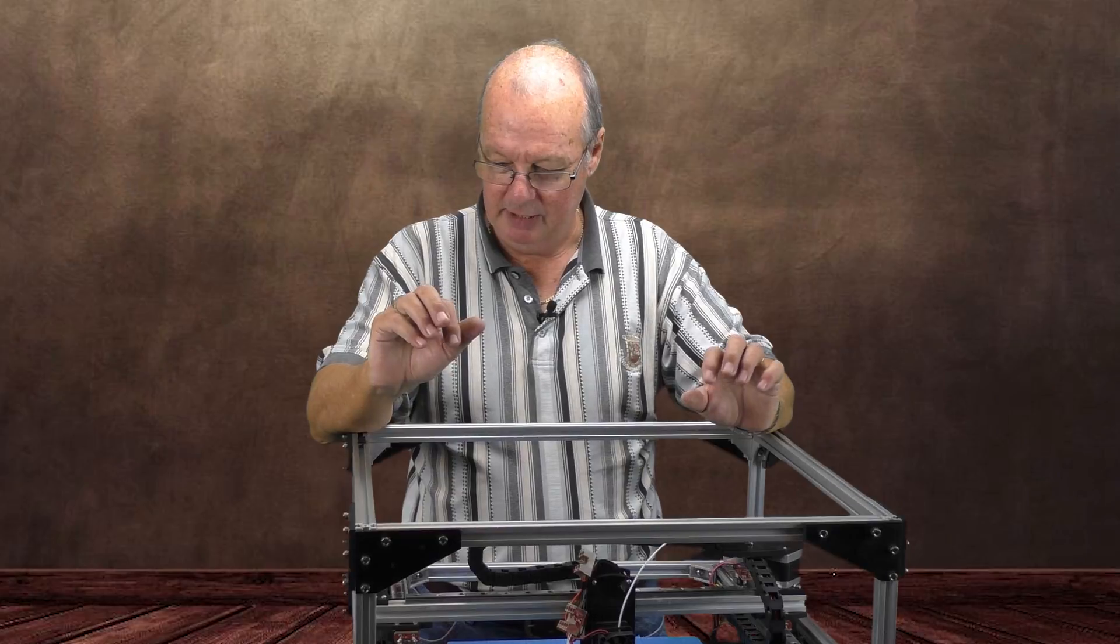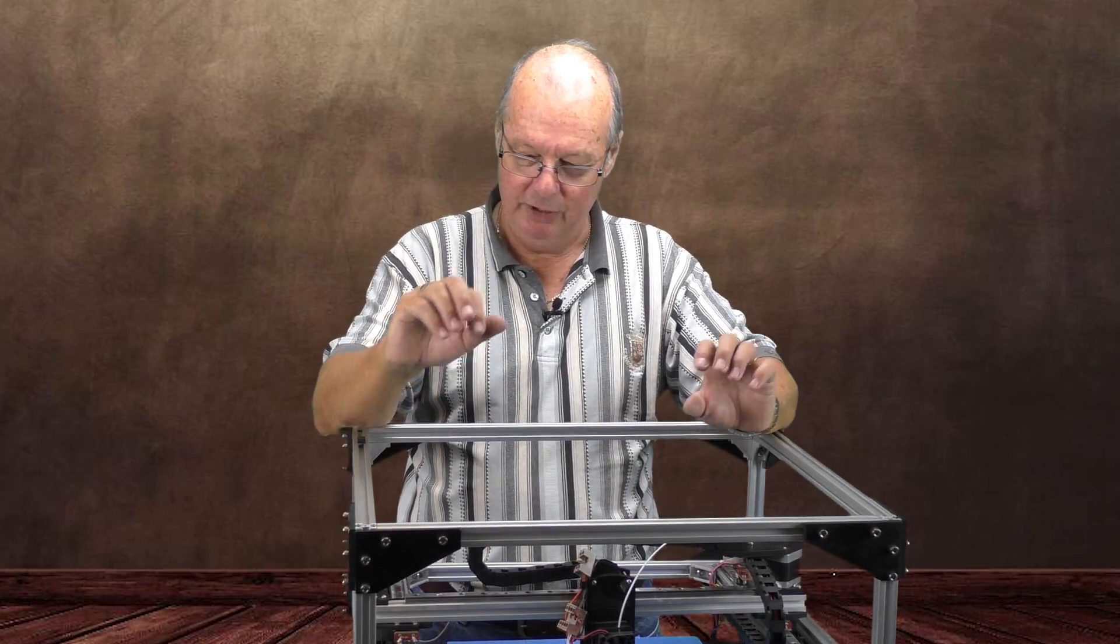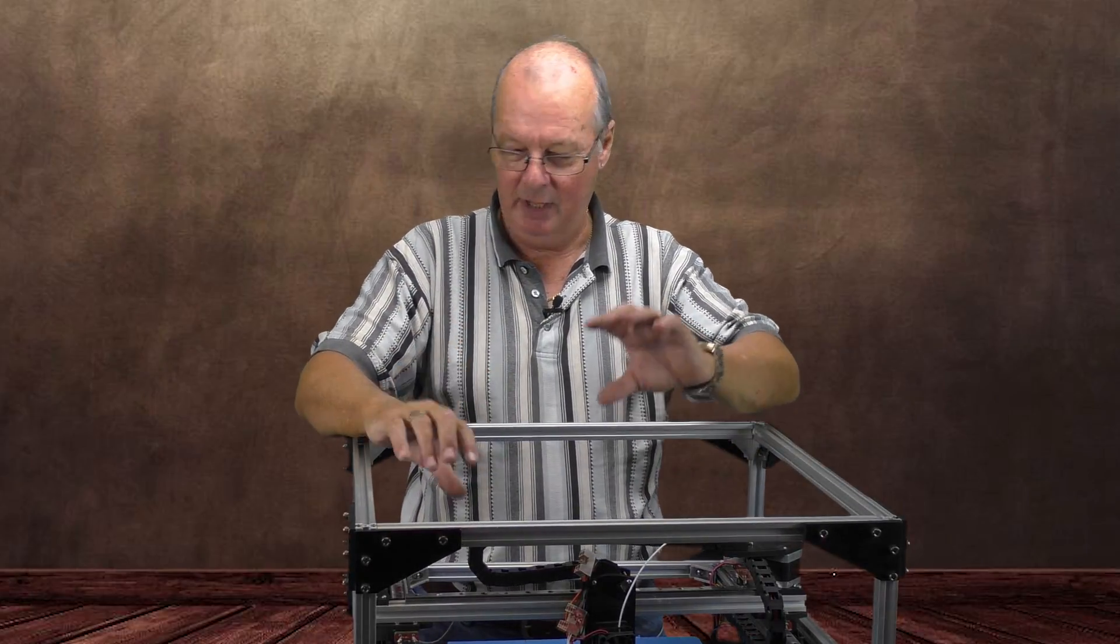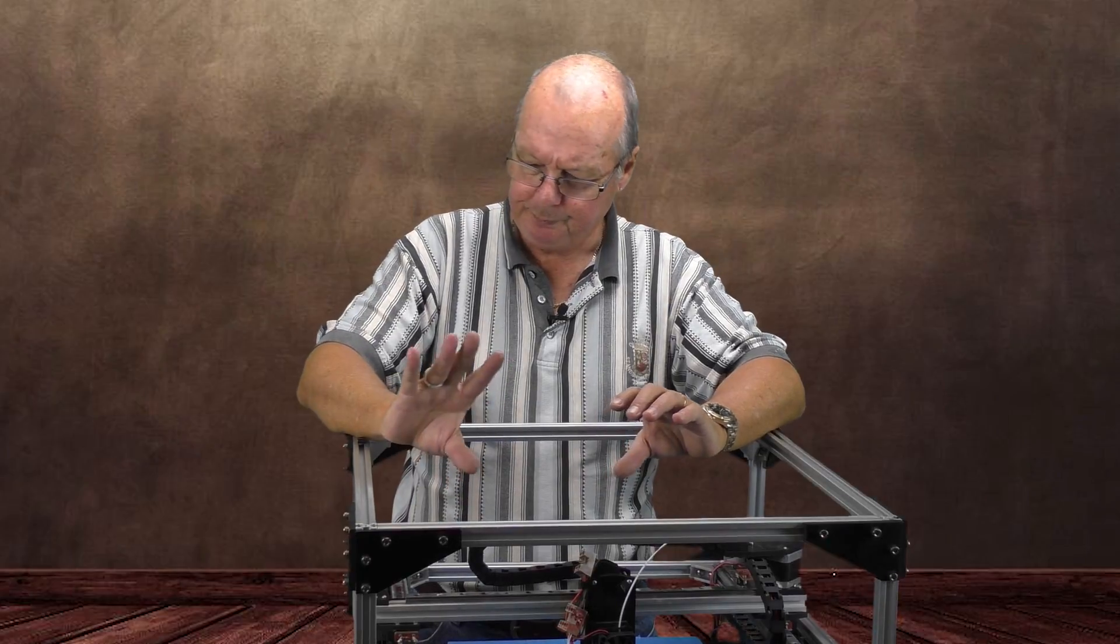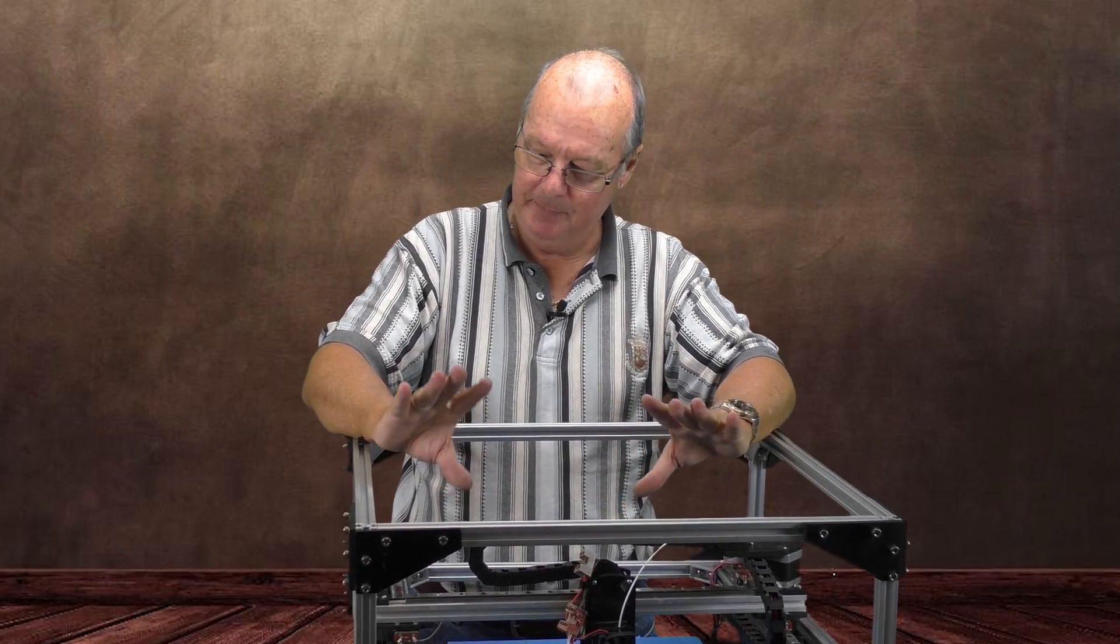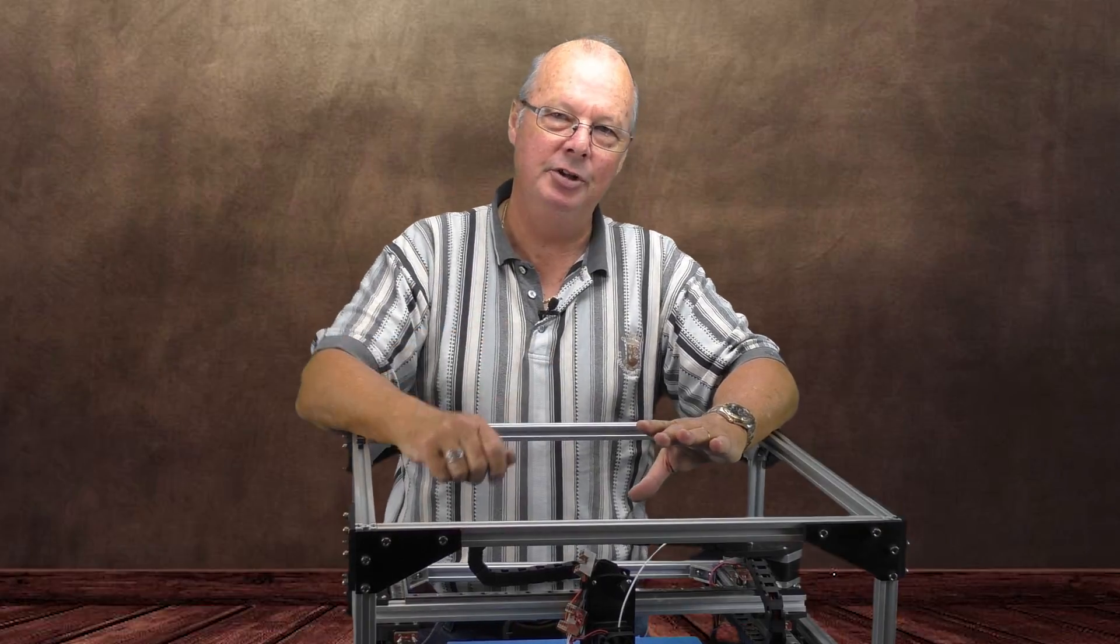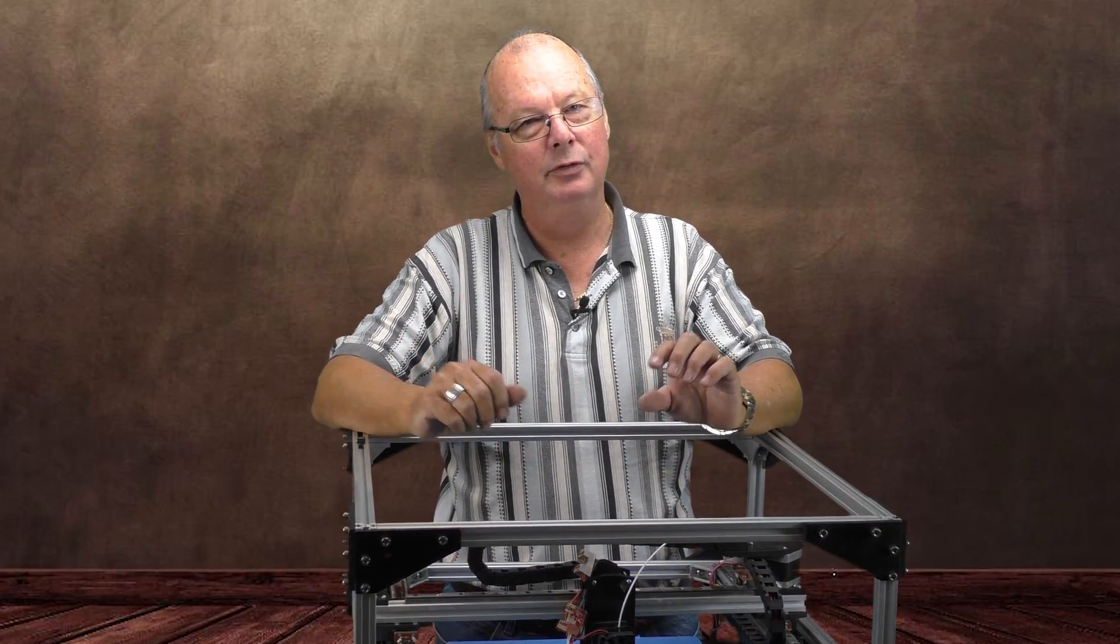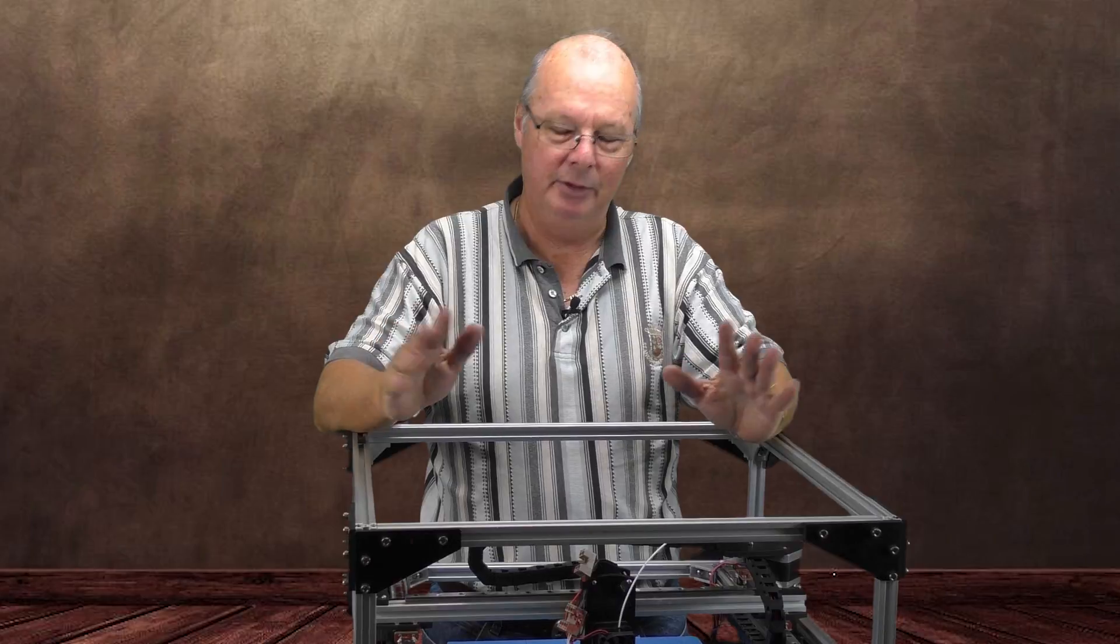So I find that the best thing to do is when you're unpacking it, as soon as you have those beams out of their packaging - the rails I should say - tape those carriages onto the rail so that they can't move. Then you don't have to worry about them sliding off the end.